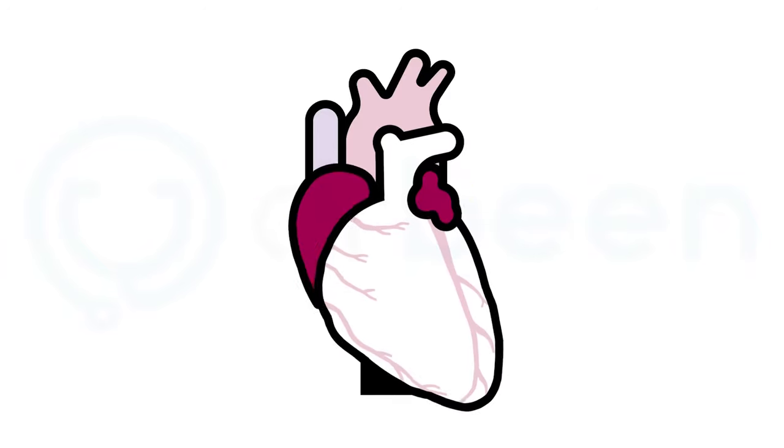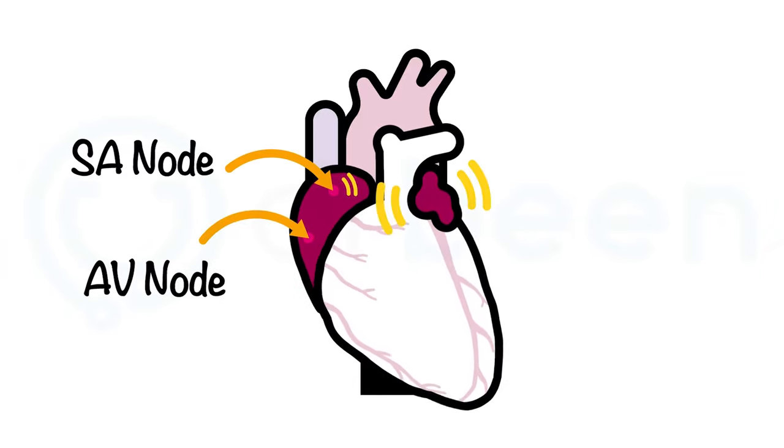This arrhythmia can start suddenly. Just as abruptly, this arrhythmia will stop as well. The arrhythmia can start after a premature atrial contraction, or PAC, which can be either atrial or junctional in nature.